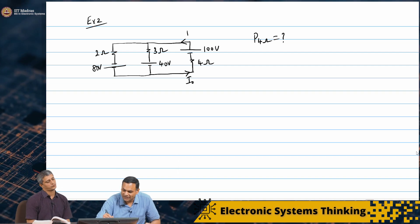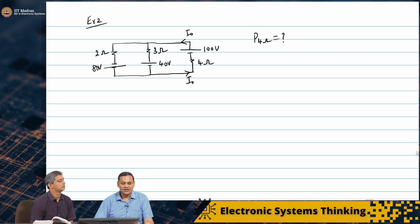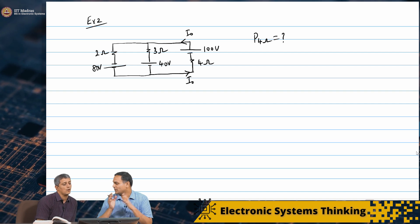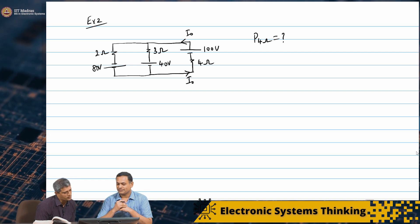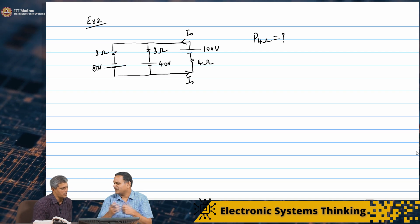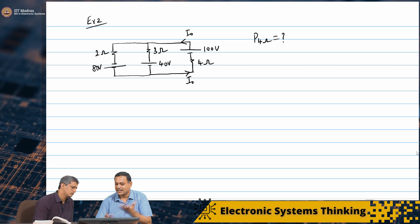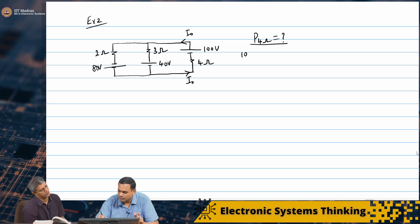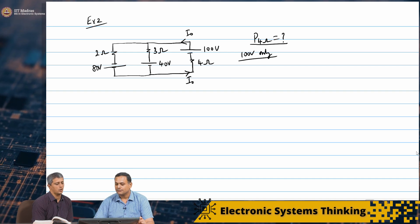The same current I₀ is flowing out. I am going to apply these voltage sources one by one. Any particular preference about which one to choose first? There are 3 equivalent options, so let me start with the largest — I will start with the 100 volts.